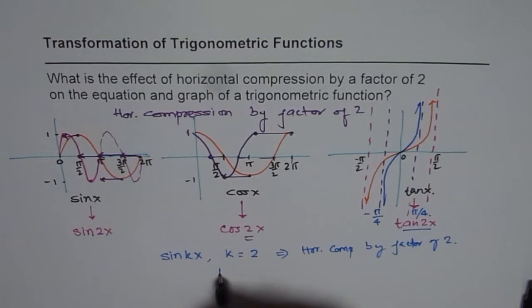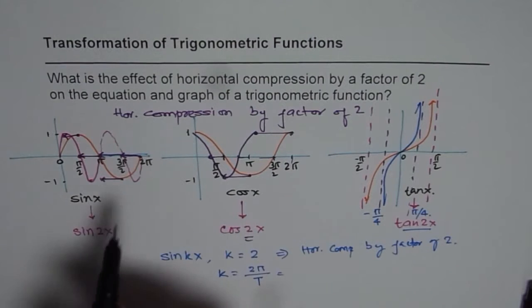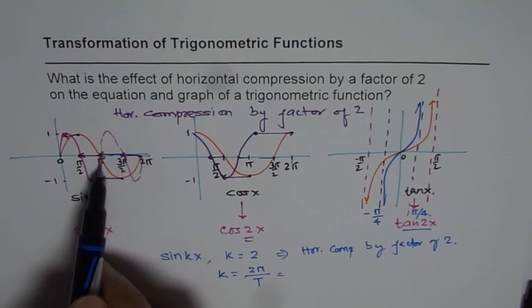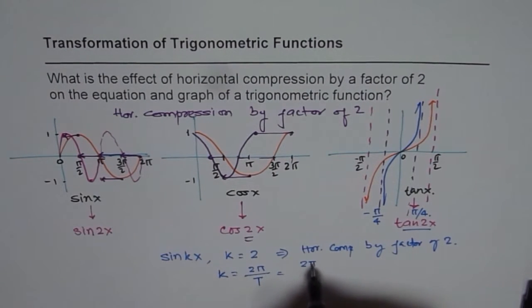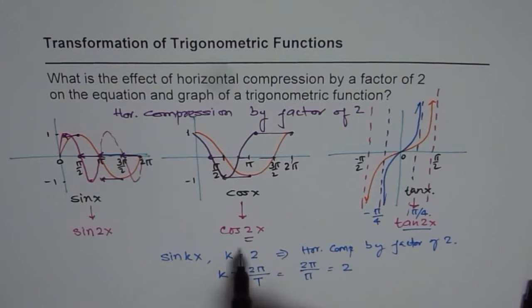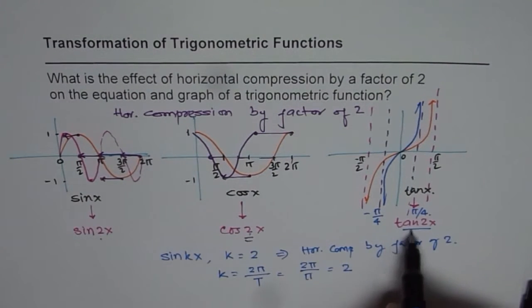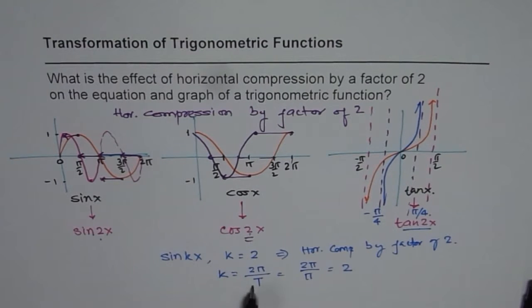You can also get the value of k by saying k equals to 2 pi by time period. Now time period is pi for your wave. So it is 2 pi by pi, which is 2. Therefore, you see this 2 in all your equations. So that is another justification of your equation.